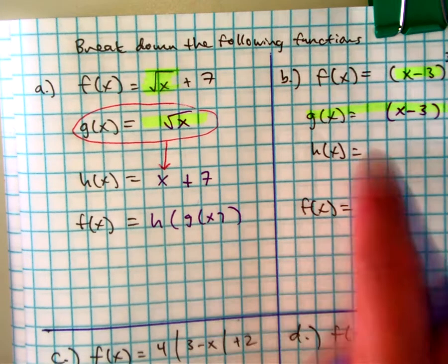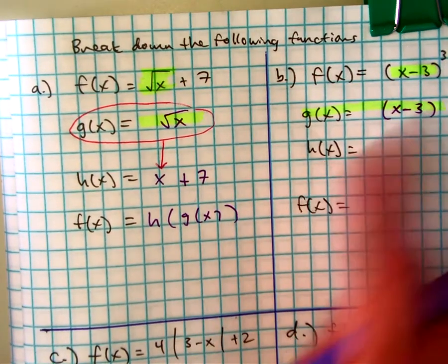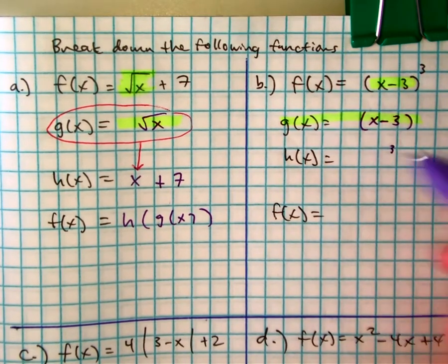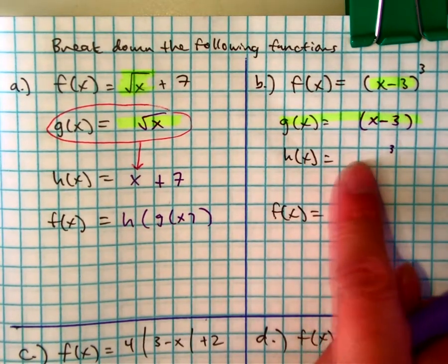For h of x, what did I not highlight? The power of 3. Remember, we need to write something in there. What do we write? x.